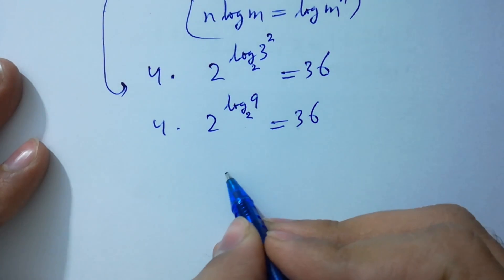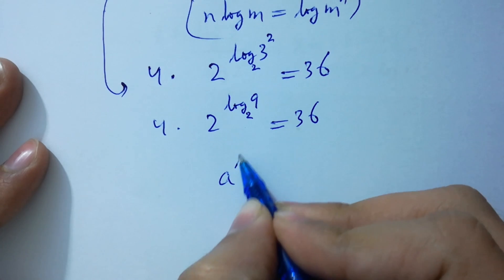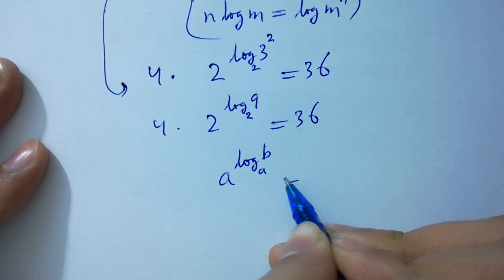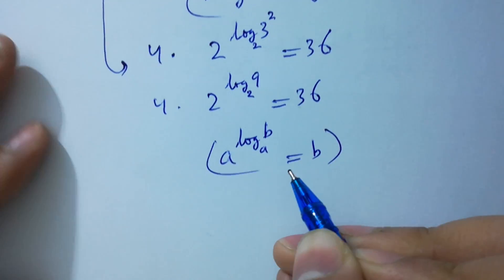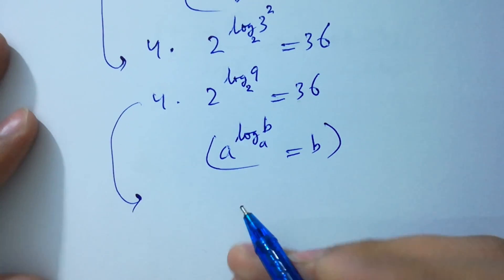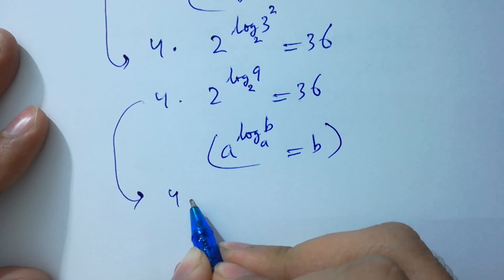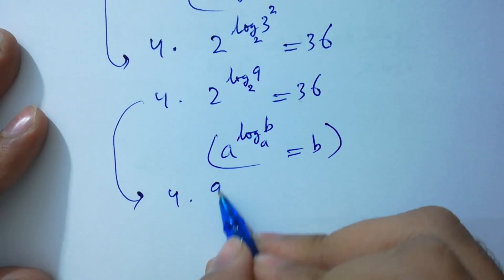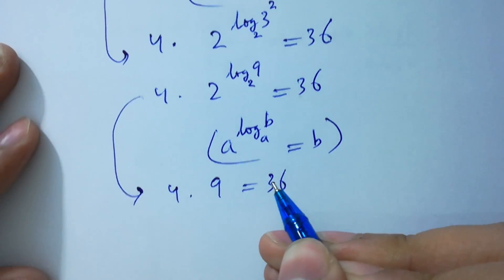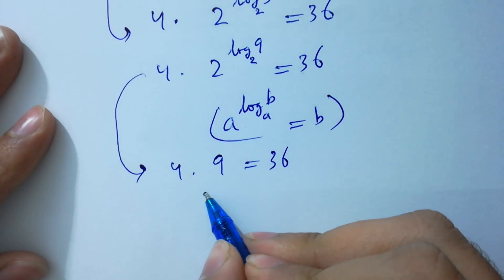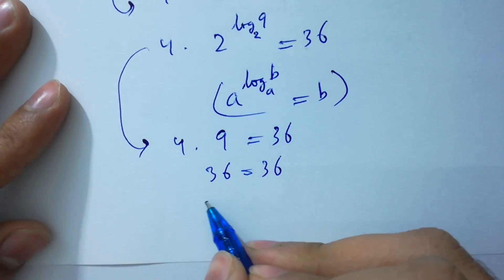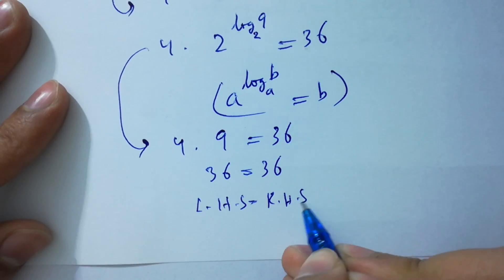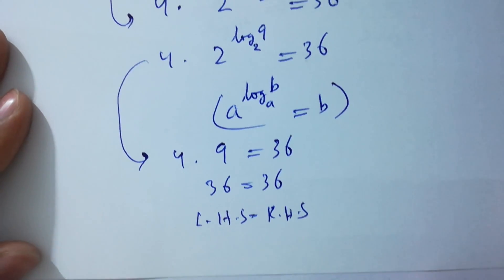Using the identity a to the power log b to the base a equals b, we get 4 times 2 to the power log 9 to the base 2 equals 36, giving 4 times 9 equals 36, so 36 equals 36. Left hand side equals right hand side.